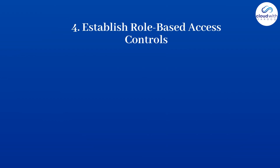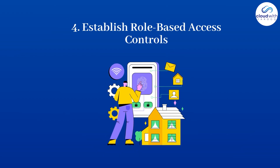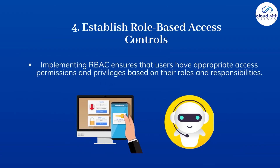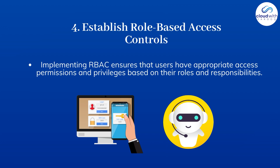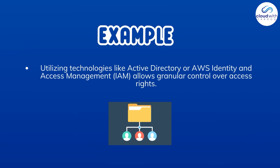Number 4: Establish role-based access controls. Implementing RBAC ensures that users have appropriate access permissions and privileges based on their roles and responsibilities. For example, utilizing technologies like Active Directory or AWS Identity and Access Management allows granular control over access rights.